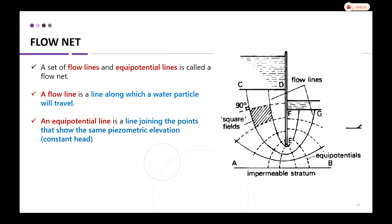The flow net is used to analyze seepage. Seepage is the movement of water through the soil. The flow line is a line along which a water particle will travel.